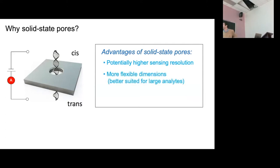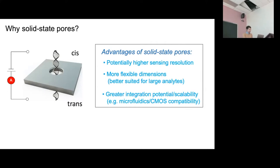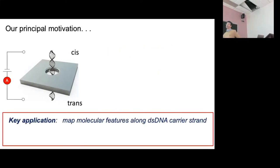The key reason for this talk is that you can make solid-state pores with much more flexible dimensions. That's important so you can look at other biological entities — not just DNA, but proteins, protein-bound DNA for example. And finally, you'd potentially have greater integration and scalability with solid-state pores — you can make them directly on CMOS chips, ultimately leading to cheaper devices.